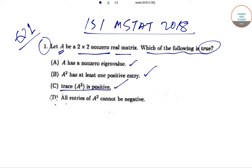Option D: all entries of A² cannot be negative. So let's begin. Let us assume a 2 by 2 matrix. Let us take a matrix A equals [a b; c d], and it is a 2 by 2 matrix. Now we'll find out A².